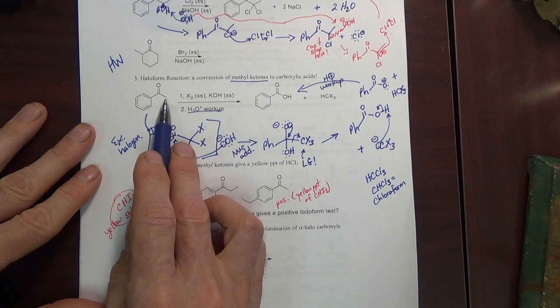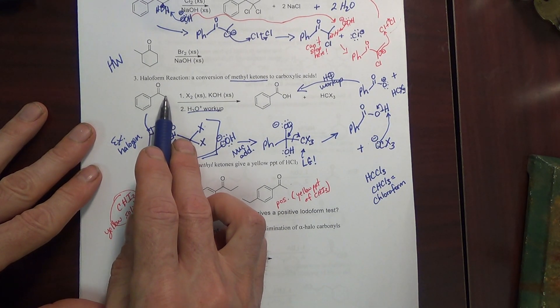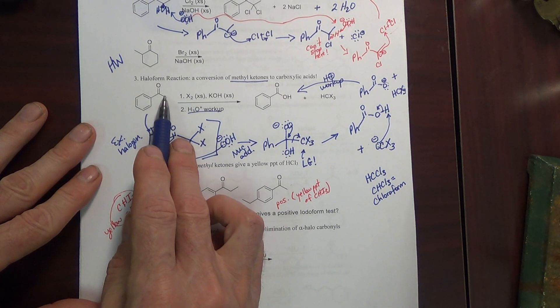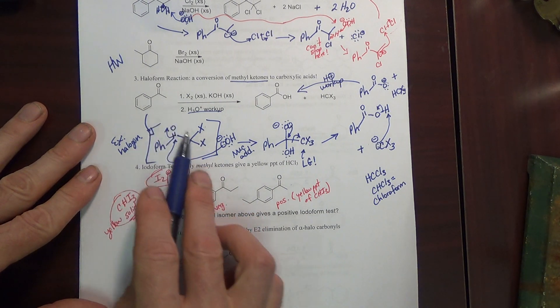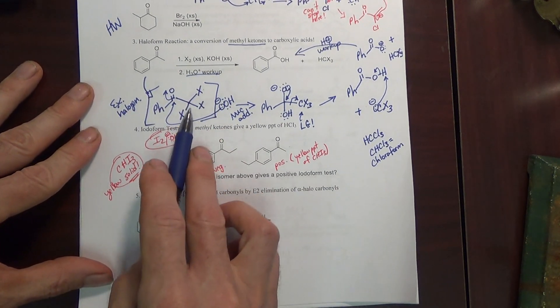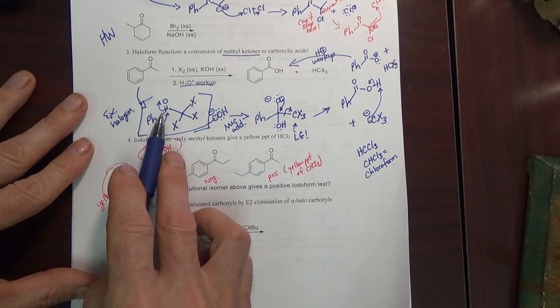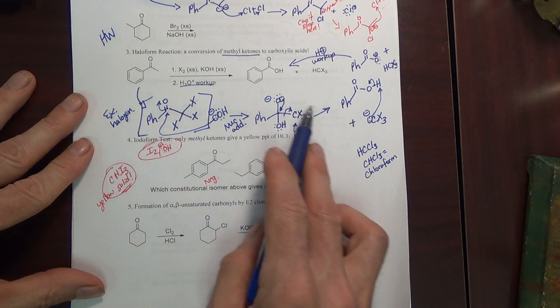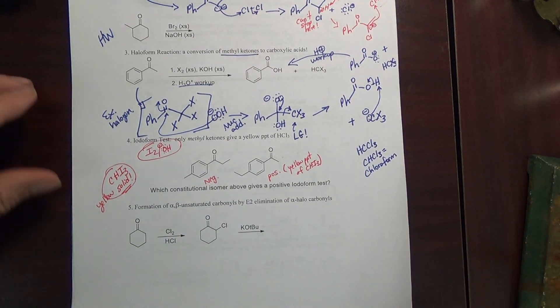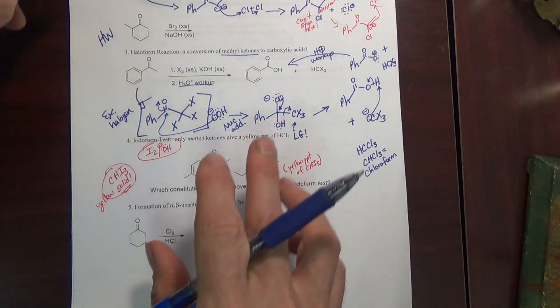In the case of a methyl ketone, that's the only time you would have three alpha hydrogens. When we do exhaustive halogenation, we get three halogens. But in the presence of hydroxide, we can actually do an additional elimination and we end up with a carboxylic acid after workup.